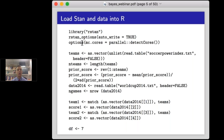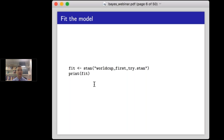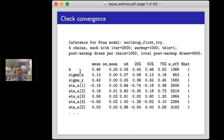We go into R to fit the model. We pull up Stan and do some configuration settings to allow it to save the program and run in parallel — when I run Stan on my laptop, it automatically uses all four chains, so it goes four times as fast. We do a little data processing in R, turn team names into numbers, set the degrees of freedom of the t-distribution, and then run Stan. Running Stan is very easy — it's just one line. It grabs the data from the R environment, and then I print the results.